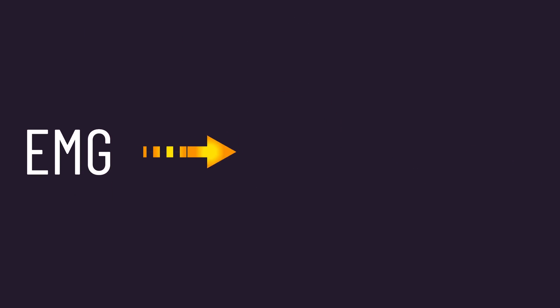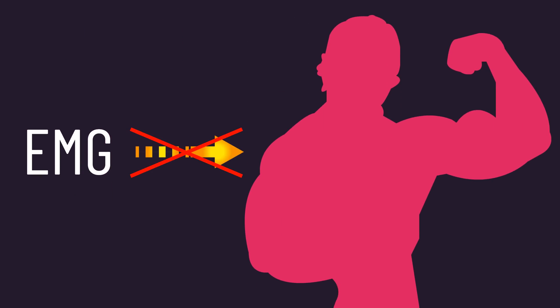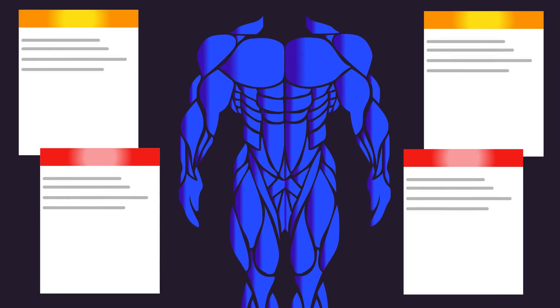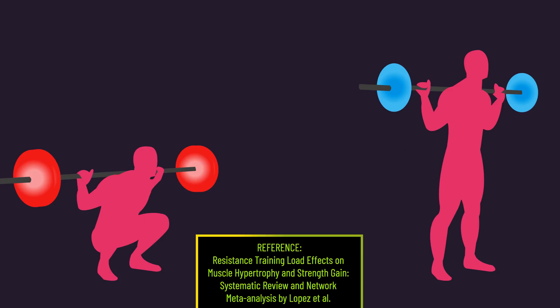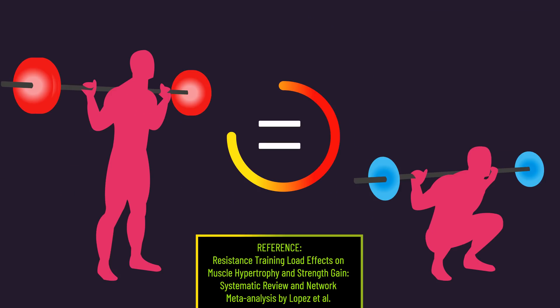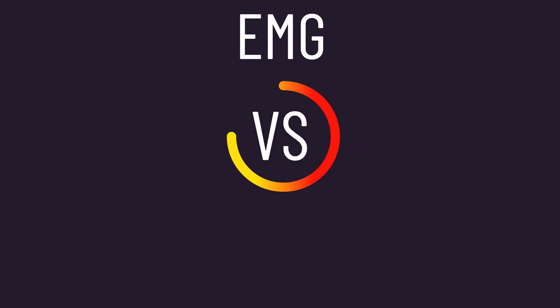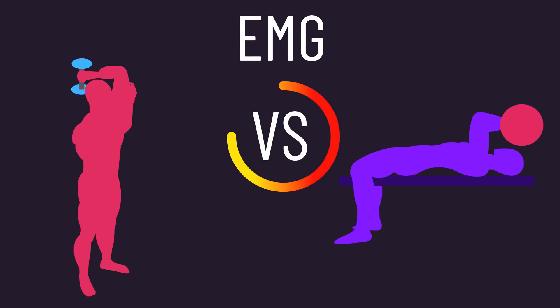This is a powerful argument against EMG's ability to infer muscle growth, as we know long-term research that actually measures muscle growth consistently finds both heavier and lighter loads are similar for muscle growth, where reps are performed to or close to failure. Thus, when comparing EMG recordings between exercises, if one is technically heavier loading it can produce higher EMG recordings even though it might not actually be more hypertrophic.